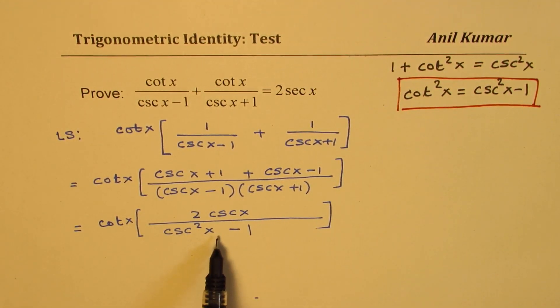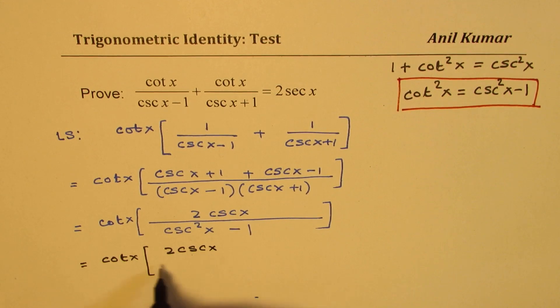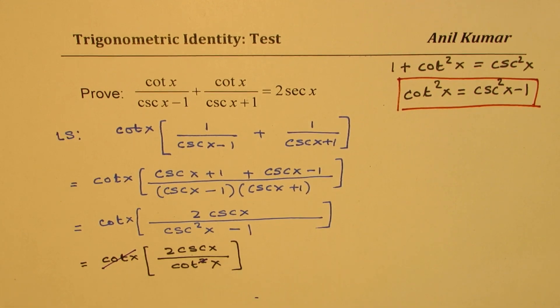We will replace the denominator by cot square x. So what do we get? So we get cot x times, in the numerator, we have 2 cosecant x. And in the denominator, we get cot square x. Now as you can see, one of the cotangents could be cancelled. So what do you get?